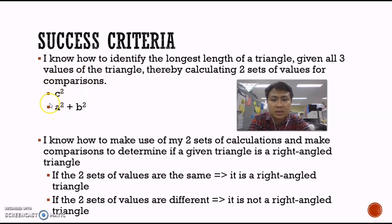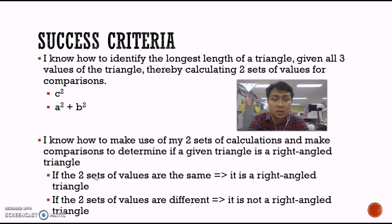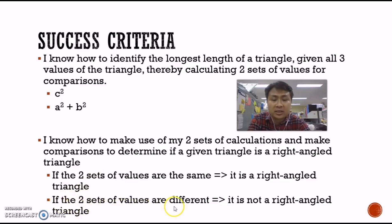So once we have made the two separate calculations, the next step is to make comparisons of these two numbers. If the two numbers are the same, then it means that the given triangle is a right angle triangle. Because if we think about Pythagoras' Theorem, c squared will equal a squared plus b squared when the triangle is a right angle triangle. So working in reverse, if c squared equals a squared plus b squared separately when we calculate them, then the triangle is a right angle triangle. And using the same logic, if the two values calculated are different, then the given triangle is not a right angle triangle.